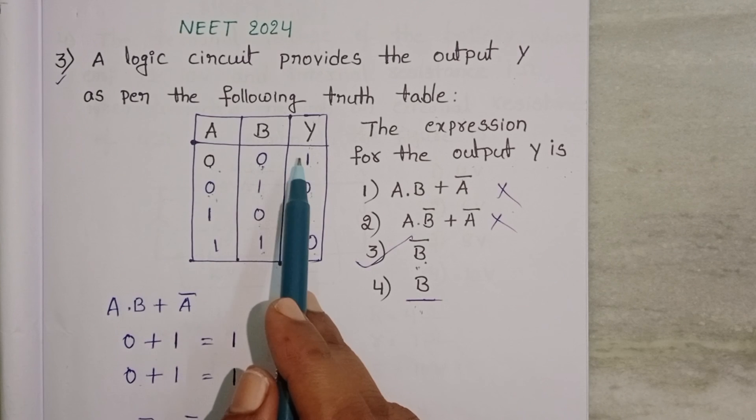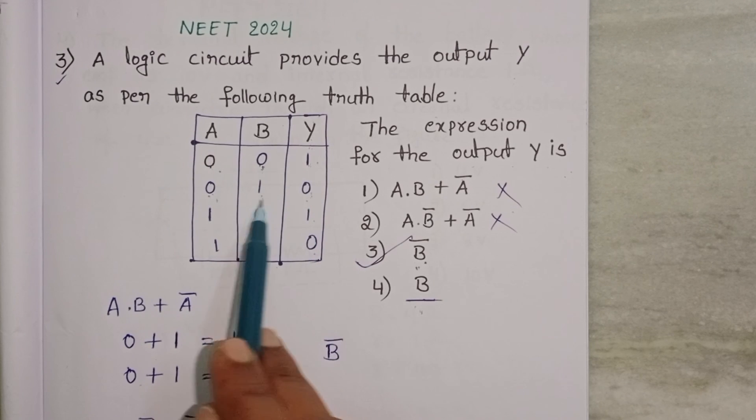And b 0 but this is 1. Here 1 this is 0. So this one also not correct.